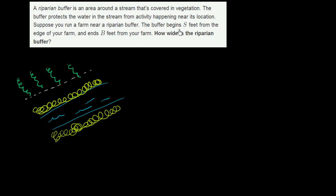It begins s feet from the edge of your farm, so it depends which side you consider to be the beginning of the riparian buffer. Maybe we'll take this side to be the beginning, so this distance right over here is s feet. And it ends b feet from the edge of your farm — this distance all the way to the other side of the riparian buffer is b feet. So the width is going to be b minus s, which is this distance right over there.